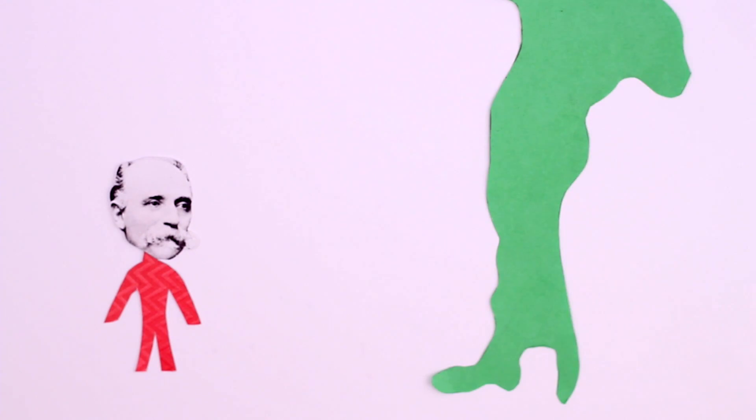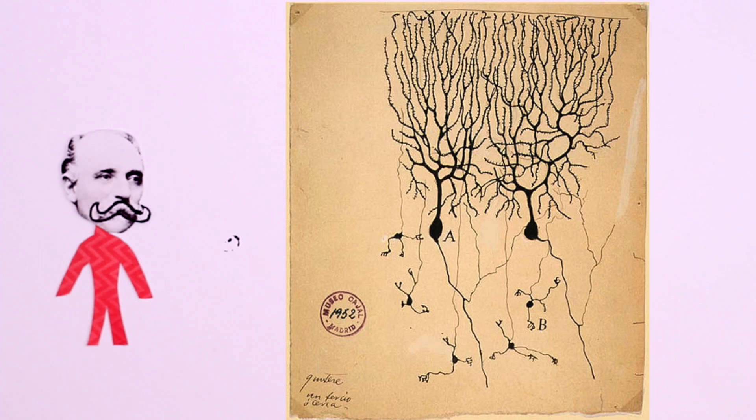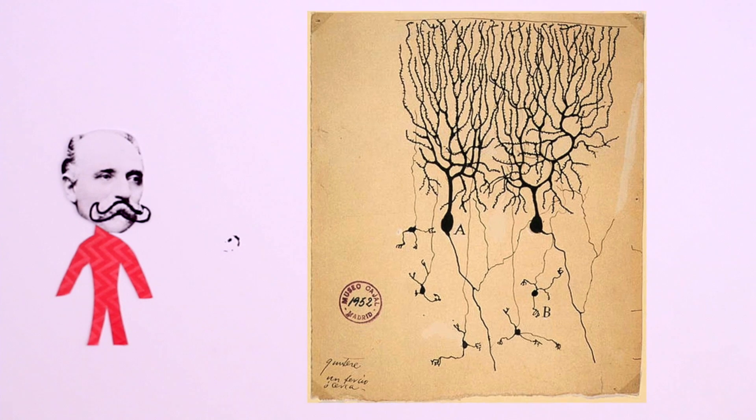Camillo Golgi, an Italian physician and soup strainer aficionado, discovered a now famous staining technique that made neurons visible under the microscope.